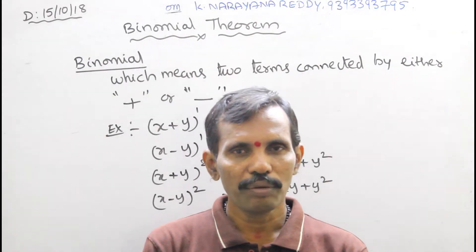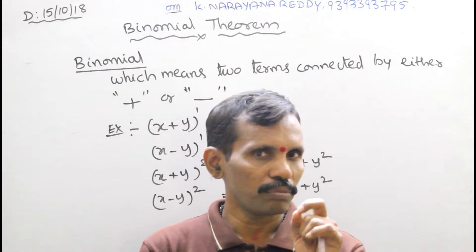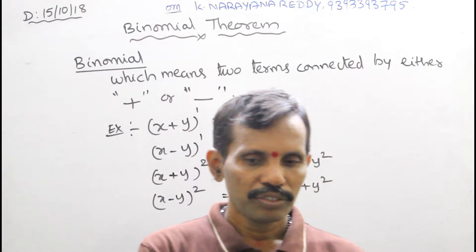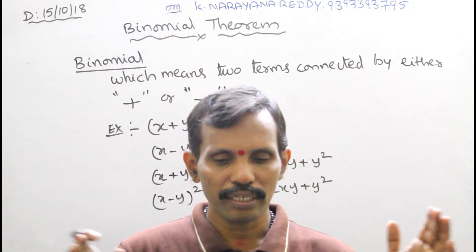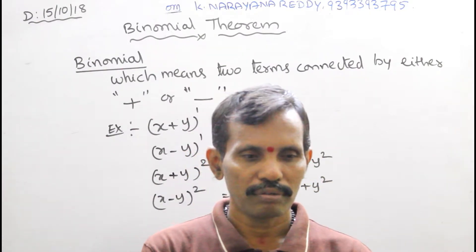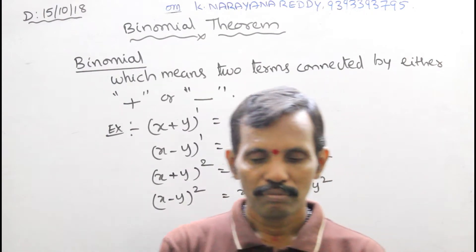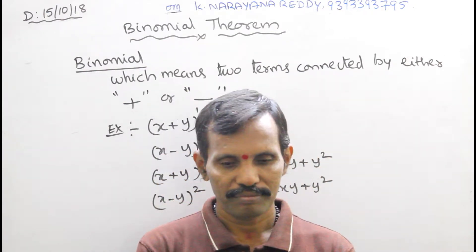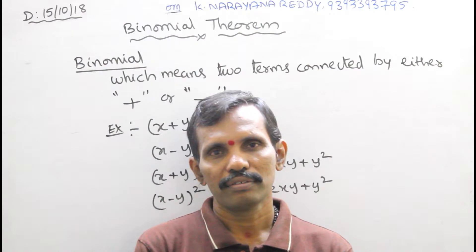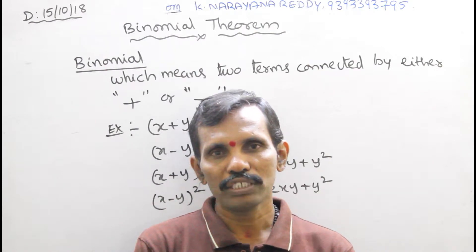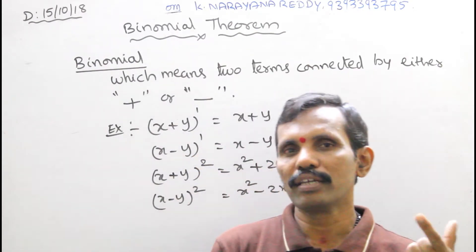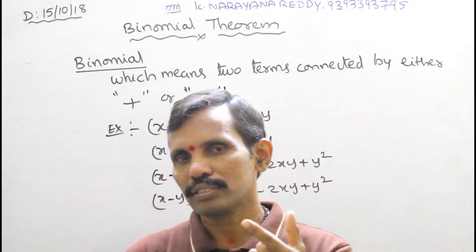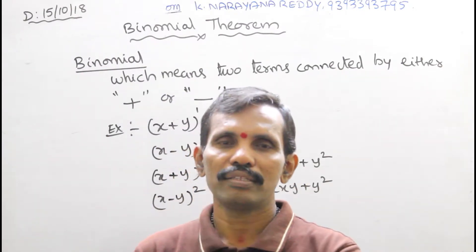There is an important point you should observe. Here, so many terms are there. For example, 100 terms. But we want to find out the middle term — how to find it, what is the value of the middle term? So for that purpose, we can use Binomial theorem.